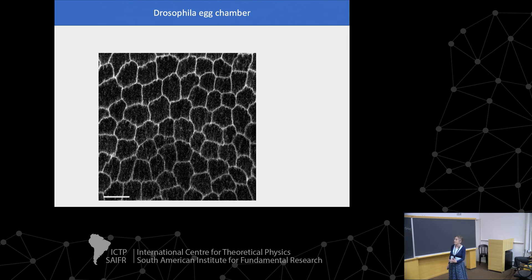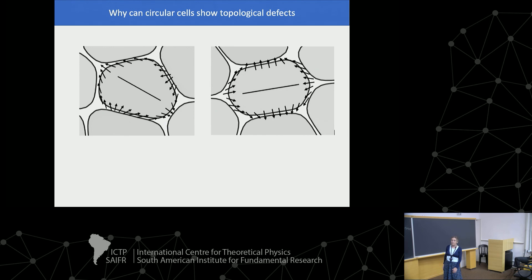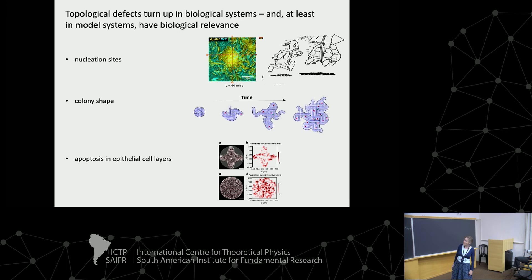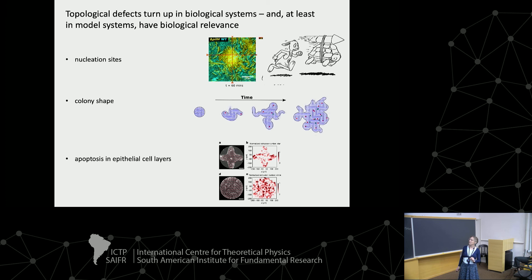Best guess at the moment is that flocking is a physics transition due to cooperative forces, but once cells start moving together they set up chemical interactions which reinforce the motion — but that's a guess. So we know how to get flocking in our model, we have lots of experiments we don't understand. Conclusions: topological defects have biological relevance, mechanics has a lot of biological relevance, and we'd like to understand how to best model the forces on cells. Thanks for listening.